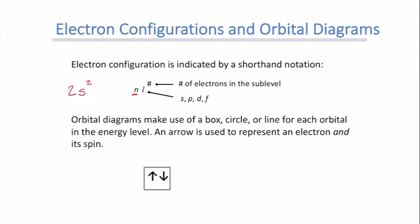Another way is to use an orbital diagram. Orbital diagrams can be drawn with boxes, circles, or lines. I usually use a line and then draw arrows pointing up and pointing down to represent the electrons. The electron spin can be positive or negative, which is why one arrow points up and the other points down.